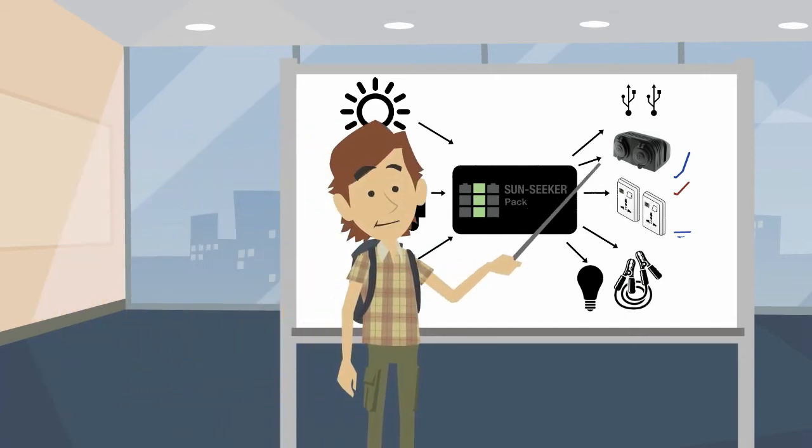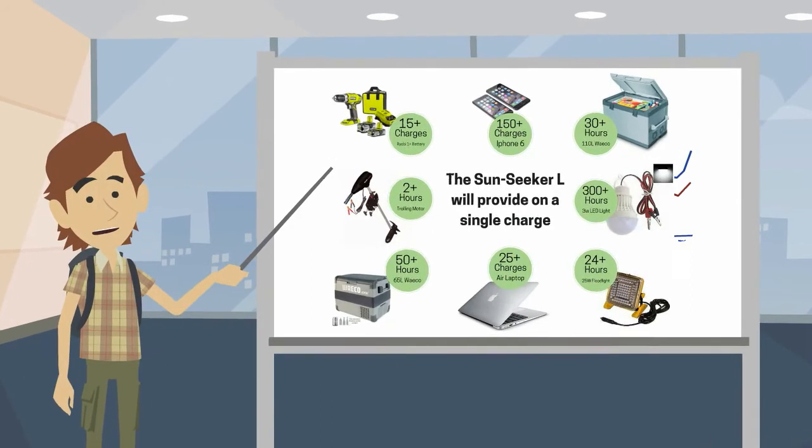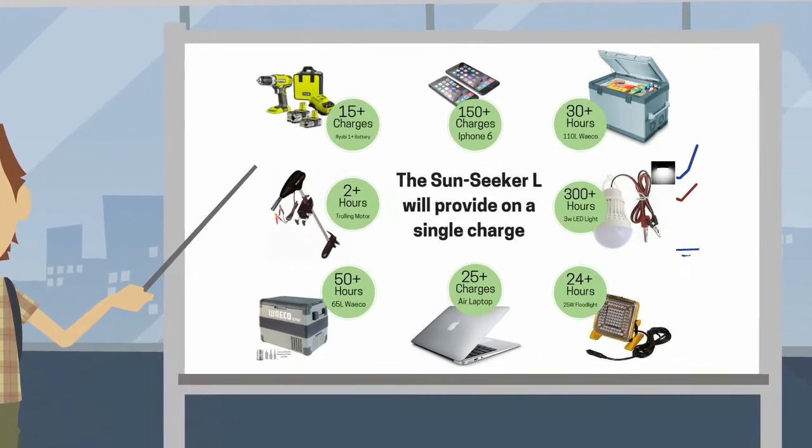It includes two USB, two cigarette and two light socket outlets. It also has two universal AC power points. Plus, we managed to include a built-in floodlight and a jump starter. Just think what you could use all that power for.